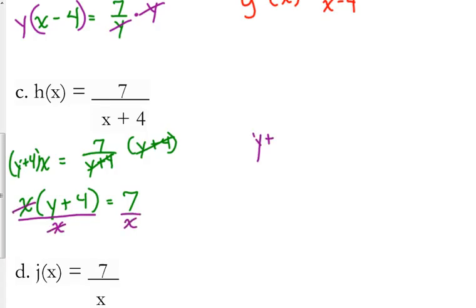So y plus 4 is equal to 7 over x, and then subtract 4 from both sides. h inverse of x is equal to 7 over x minus 4. Not 3 over x, 7 over x minus 4.